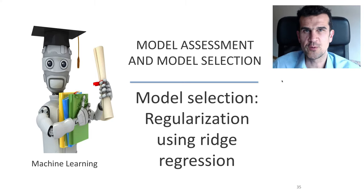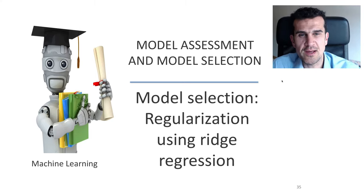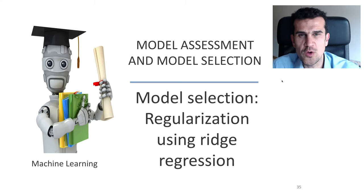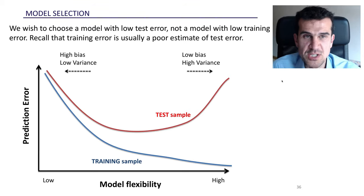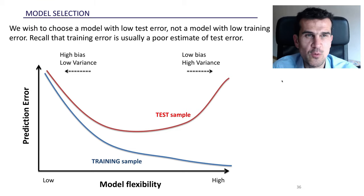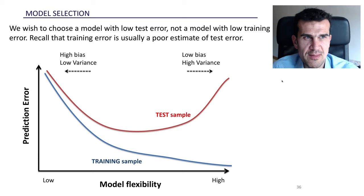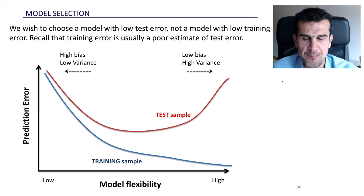In this video we're going to see what regularization is. This is a very important technique that is going to help us select the best model. In machine learning, what we try to do is to build models that predict well in new situations, and that means selecting models that have a low test error. Our aim is to have a wide range of models to choose from and select the one with the lowest test error.